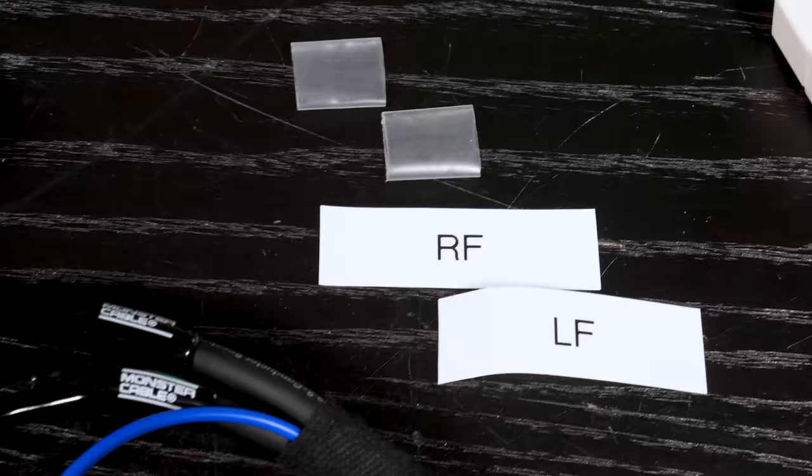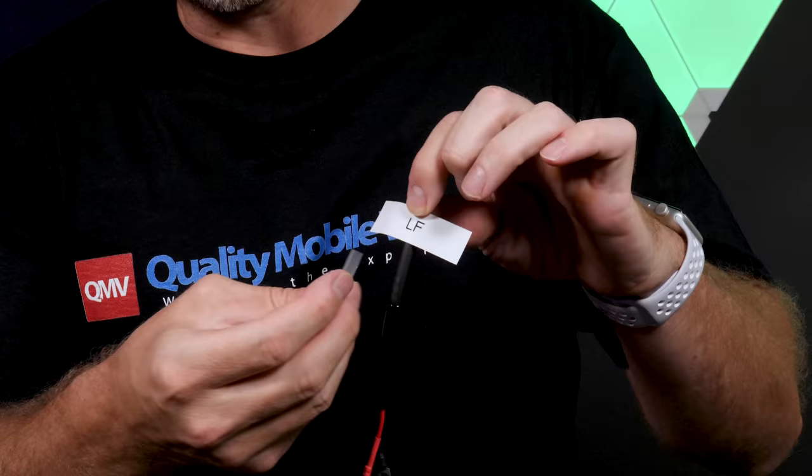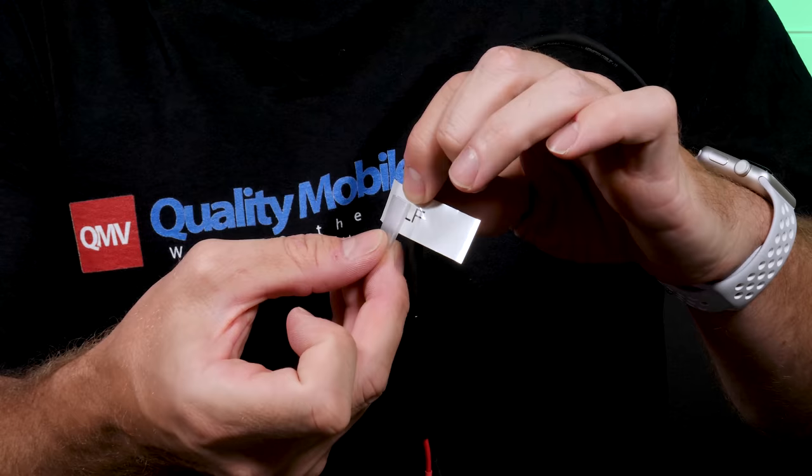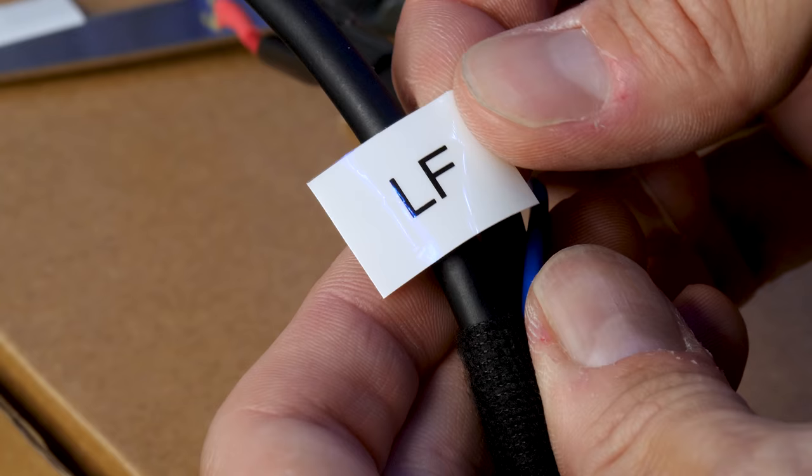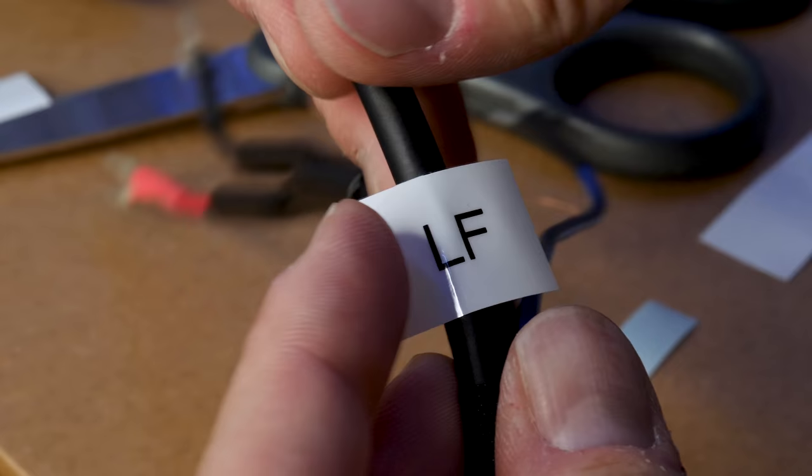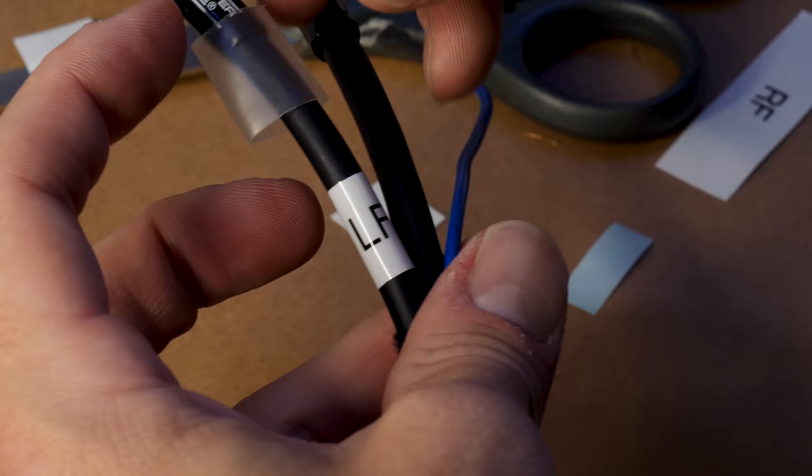One thing you want to do before soldering is to label your wires. What we do is use a P-Touch, print nice labels, and then use heat shrink tubing over the label to make a really nice wire label. This way once you have all the wires run in the car, it's easy to identify at the amplifier what's the left front, what's the right front, what's the right rear, and left rear.